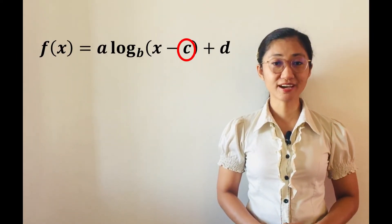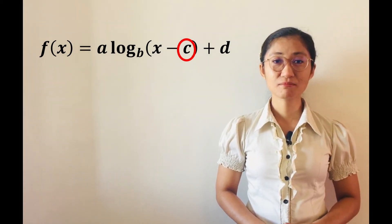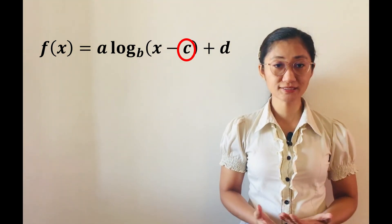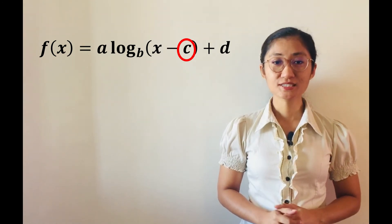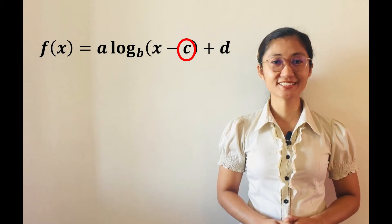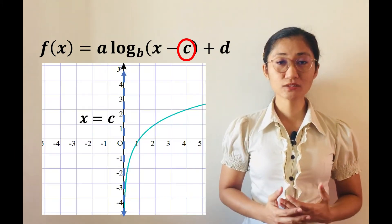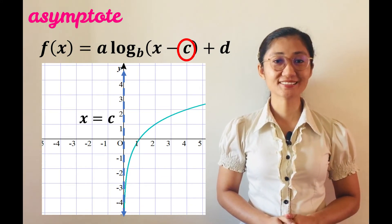Moreover, we have learned from the discussion of domain and range of a logarithmic function that while the range is always the set of real numbers, the domain is dependent on the value of c in f(x) = log(x − c), or in f(x) = a·log_b(x − c) + d. That is, the domain is x greater than c. This denotes that while there is no horizontal asymptote, the vertical asymptote is x equals c.